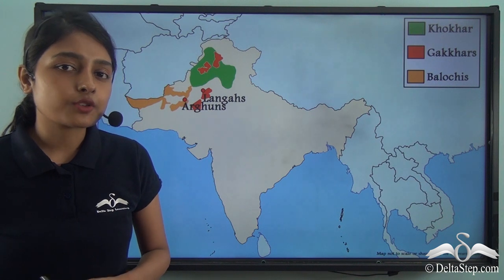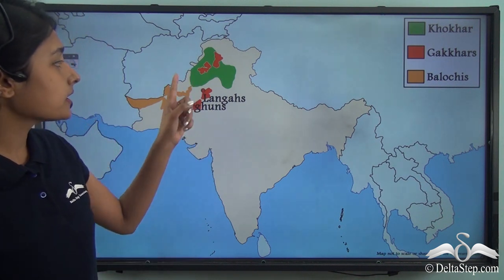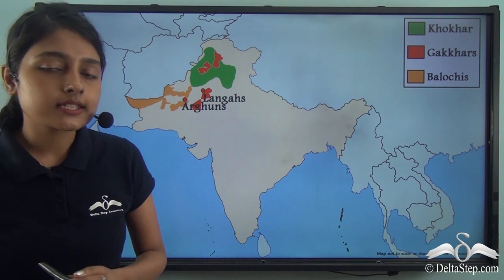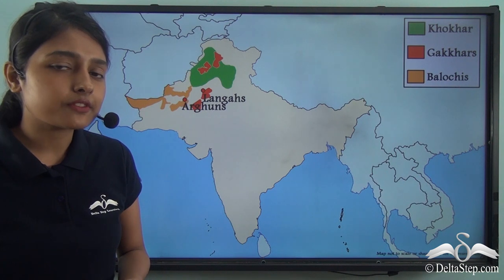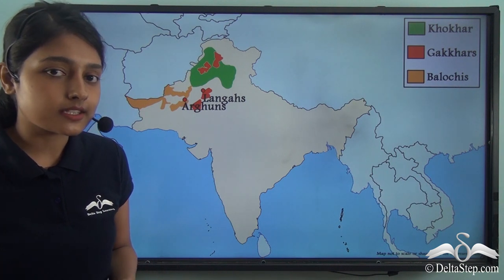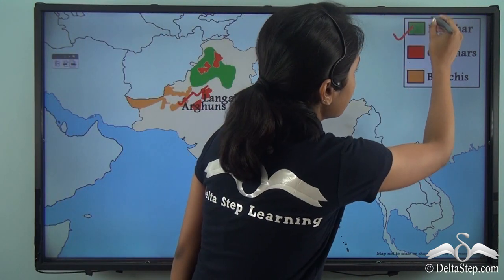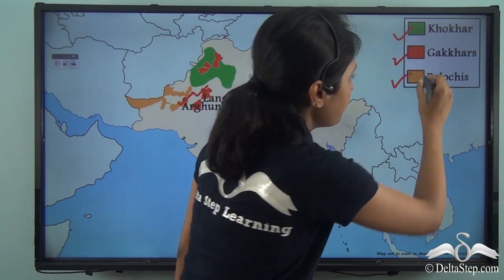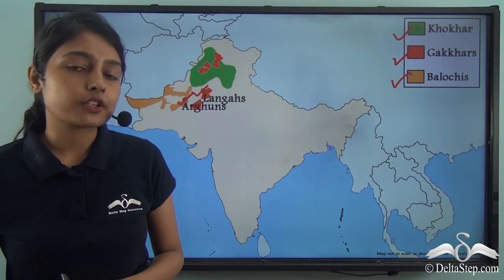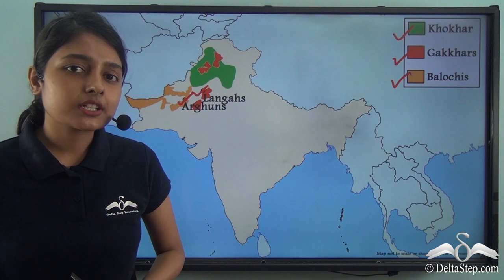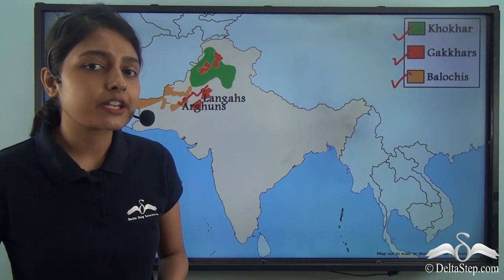All the tribes discussed so far — the Langas, the Arghuns, the Khokhars, the Gakkars, and the Balochis — were found in the northern and north-western part of the Indian subcontinent. Let us now travel to a different area to find out about tribes found there.